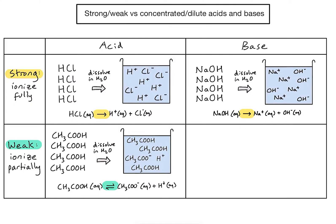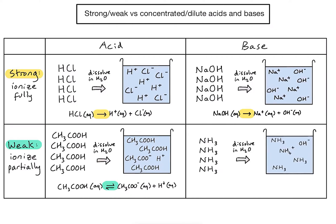Let's take another example of a weak base. Ammonia is a common one. Dissolving four molecules of ammonia in solution, we see a similar thing — only one of those molecules has ionised or formed ions in solution. Ammonia is not very good at ionising, so those ions might bump into each other, reform ammonia again, and perhaps one of the other molecules might ionise.